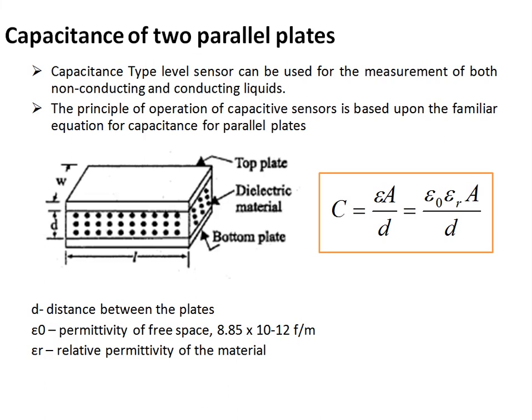Before discussing details, let us review some basics of capacitors. A capacitor consists of two metal plates separated by a dielectric material. The capacitance is given by C = ε₀·εᵣ·A/d, where ε₀ is the permittivity of free space, equal to 8.85 × 10⁻¹² farads per meter.